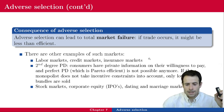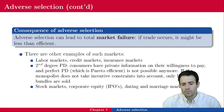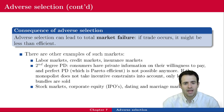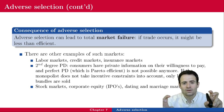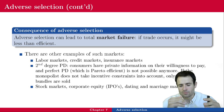We can also find adverse selection problems on stock markets, corporate equity, initial public offerings, and dating and marriage markets — in each of these cases, one side of the market has information the other side doesn't, and that might lead only bad-quality agents or firms to take part in a transaction.